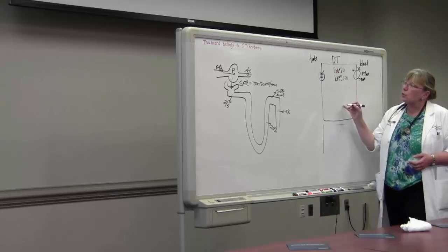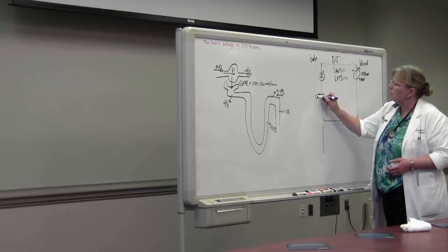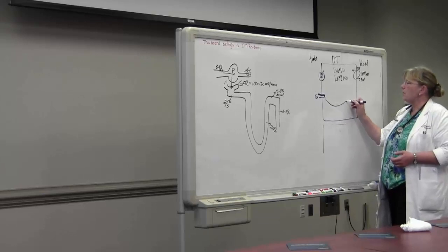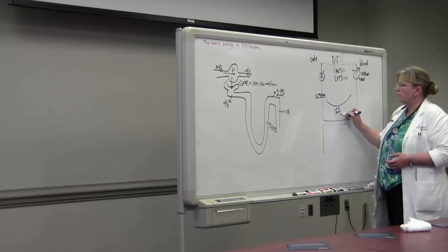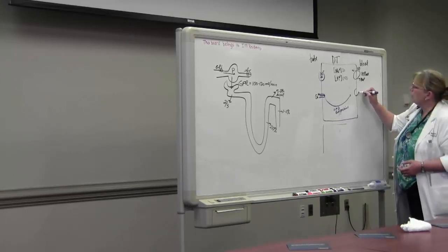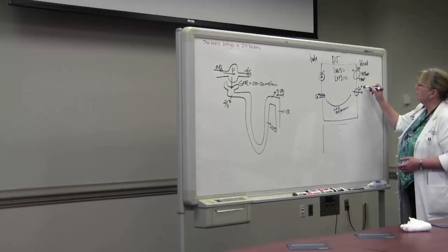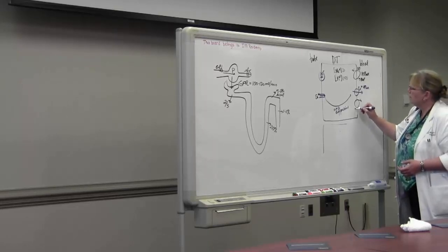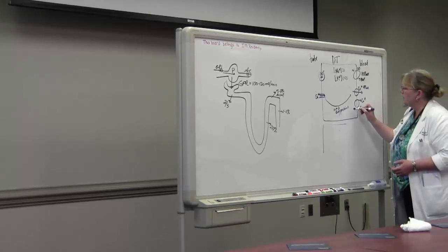The other thing that gets absorbed in the distal tubule is calcium. And this happens through calcium channels. The calcium comes in. It gets buried across the cell by vitamin D-dependent proteins. And it gets excreted out the back door by a calcium ATPase and a calcium-sodium exchanger.